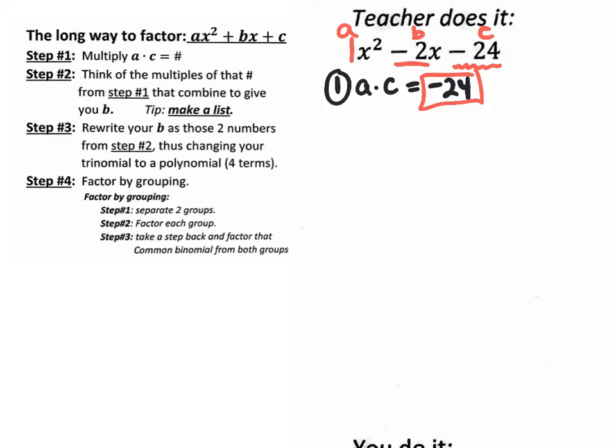Step 2, we need to think of the multiples of that number, negative 24, that combine together to give you b. So that's what step 2 says. Think of the multiples of negative 24 that combine together to give you the b value, which is negative 2. And it does say tip, make a list.